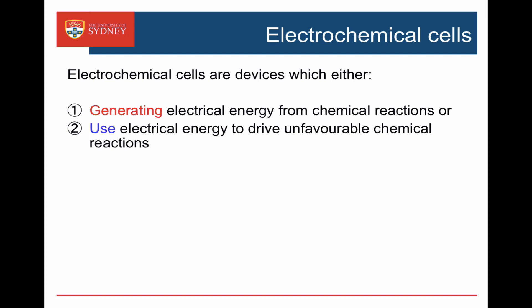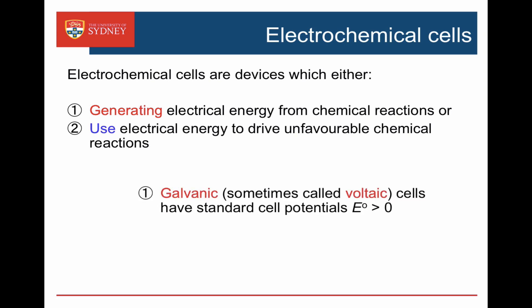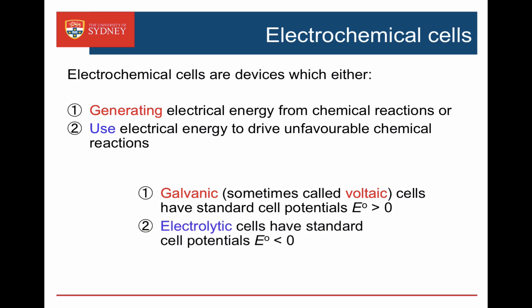In this video we're going to look at electrochemical cells. These can either generate electrical energy from chemical reactions, in which case they're called galvanic or sometimes voltaic cells, and these have standard cell potentials which are positive. Electrochemical cells can also use electrical energy to drive unfavourable chemical reactions. These are called electrolytic cells, and unfavourable chemical reactions have cell potentials which are less than zero.